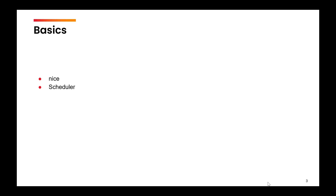Schedulers are of three types: long term scheduler, short term scheduler, and medium term scheduler. The logic can apply to all those schedulers. Every process is given a certain priority, and based on that priority the system decides when to schedule the process.